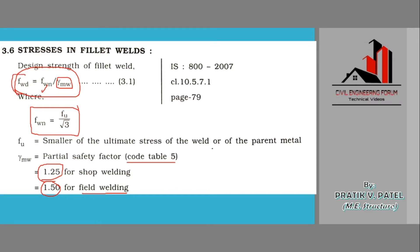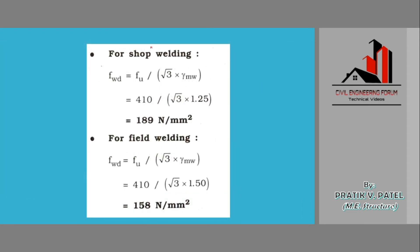Then we can directly have an idea for this fwd in a resolved way. That is, for shop welding, putting up the values we would be having 189 newton per mm square, only if we are having the value of ultimate stress 410. That is fu upon square root 3 into gamma mw, because it is shop welding so I have kept 1.25.